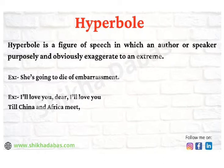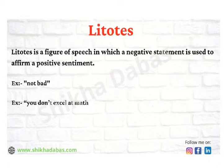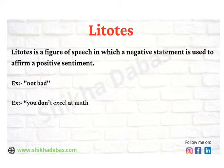The next literary device is litotes. It is a figure of speech in which a negative statement is used to affirm a positive statement. The classic example is the phrase 'not bad' — by negating 'bad,' you are saying something is at least good. In real life, if someone is doing a poor job at math, it may be less hurtful to say 'you do not excel at math' rather than 'you are terrible at math.' Litotes can also soften the impact of criticism.